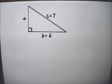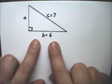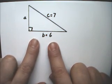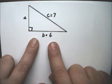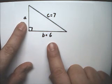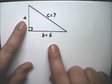Hello, this is Exponents and Radicals, the Pythagorean Theorem, Example 1. In Example 1, we have to figure out the unknown side length, and here the unknown side length is A.